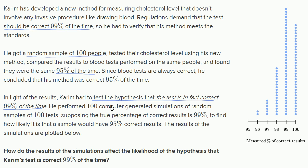He did 100 simulations, and each of those samples essentially simulated the test results of 100 people. It's like using a computer that assumes the test is in fact correct 99% of the time, and simulates 100 of these samples.